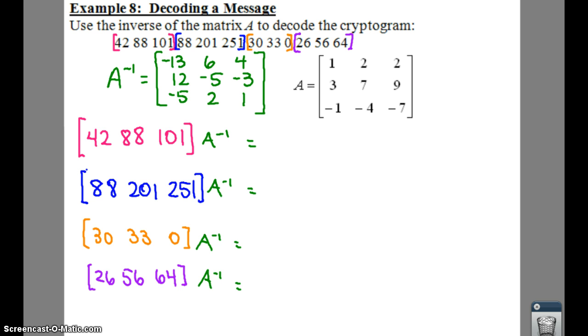So in the direction it says use the inverse of the matrix A to decode the cryptogram. If you notice I already found your inverse. So what you can do is just under your calculator type in 1, 2, 2, 3, 7, 9, negative 1, negative 4, negative 7. Then hit your A to negative 1 button. And then you find your inverse gives you this bad boy over here.